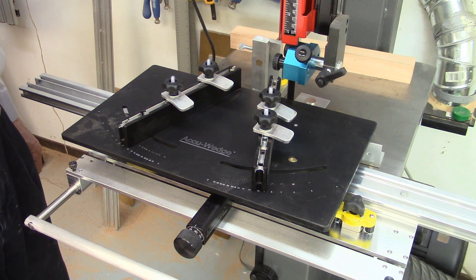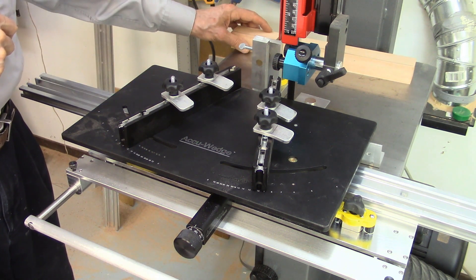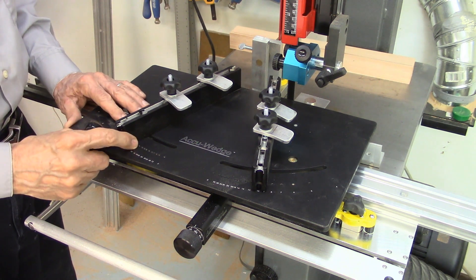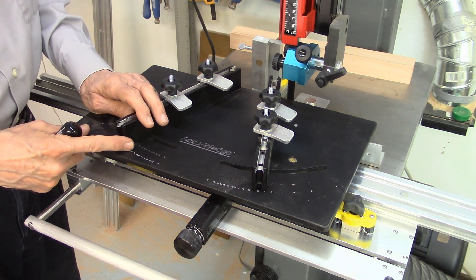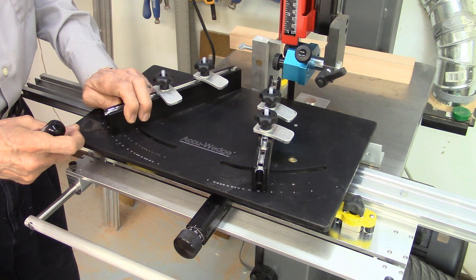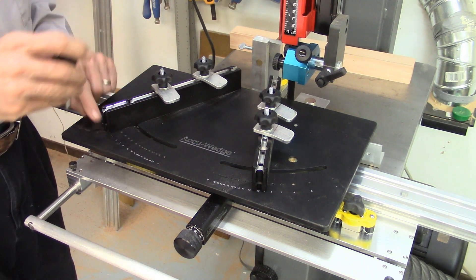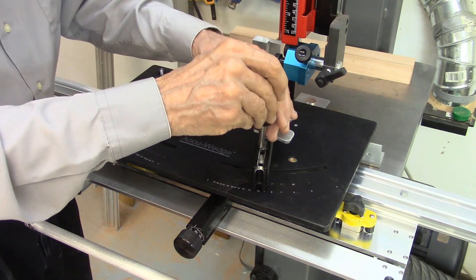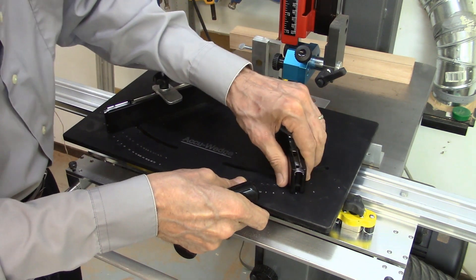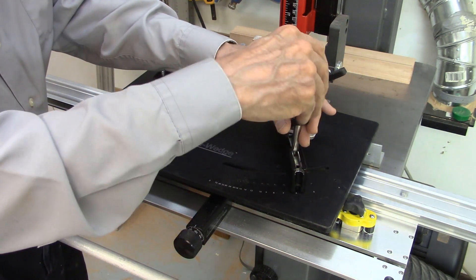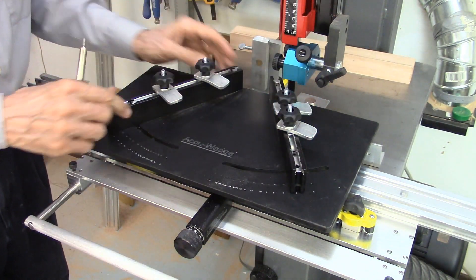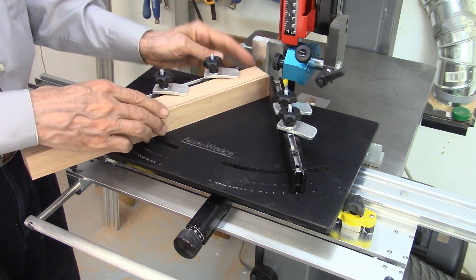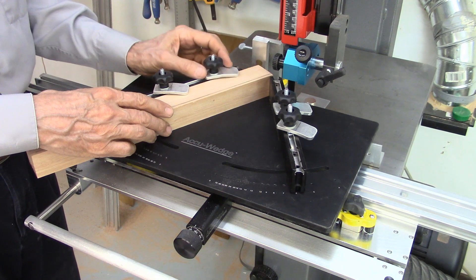We're now ready to run our first set of segmented wedges to make a segmented ring. So the first thing I need to do is select the number of segments I want in my ring. So for this sample, I'm going to make six segments. So I just move my fence to the sixth position and then lock it in place. Make sure this is unlocked. Move that to the sixth position and again lock it in place. Position the wood to be cut along one of the fences and we're going to make our first cut just to square off the board.